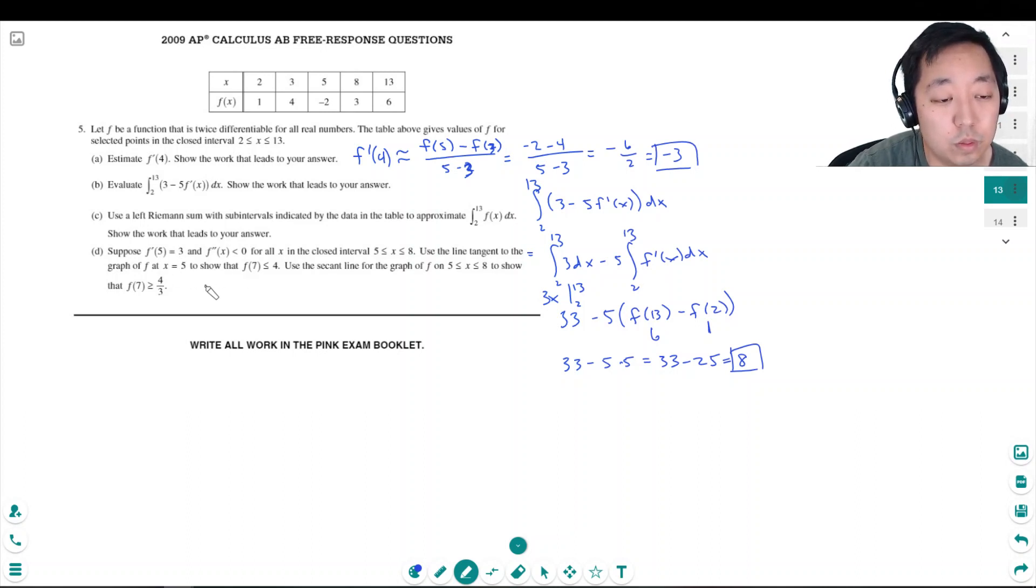We know that, let's do the tangent line at x equals 5. I would need a point. y would equal m times x minus x naught plus y naught. This is the slope point form. I know the slope at 5, that's 3. They told us it was x equals 5, so it's x minus 5, plus the value at 5 is negative 2, so plus negative 2 there.